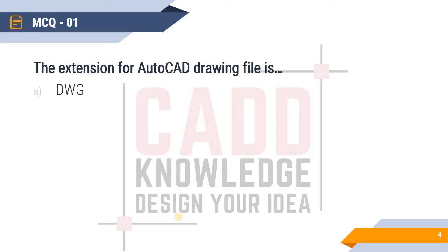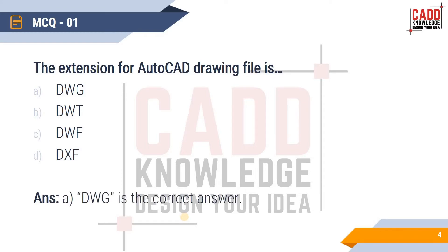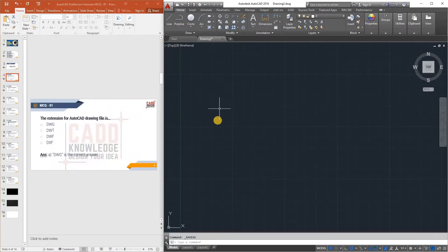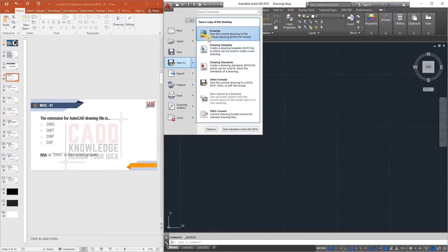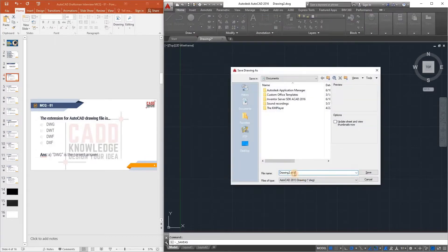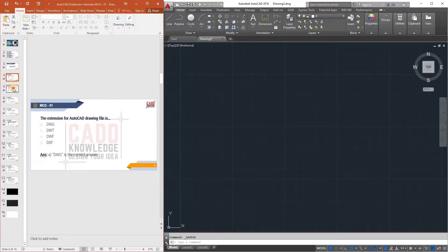Our first MCQ: What is the extension for an AutoCAD drawing file? Options are DWG, DWT, DWF, and DXF. The answer is DWG. We can verify this in AutoCAD — go to Save or Save As, and you can easily see the extension .dwg when saving a drawing.